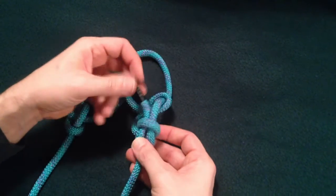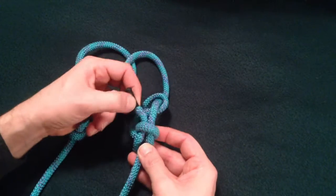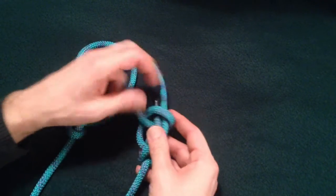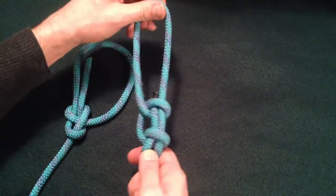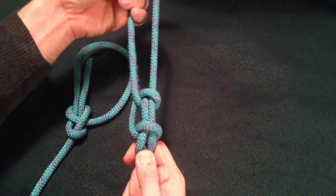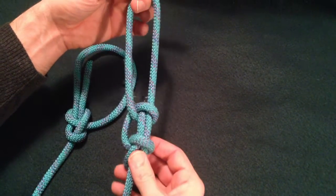Rather than a regular bowline where this guy might be free to move around, with the water bowline, that loop, especially once there's some tension on here, hangs onto this tail and secures it.